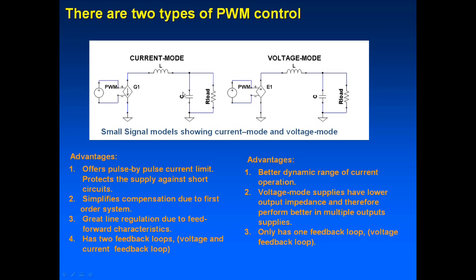That first-order behavior is a big advantage: you can compensate with a type 2 op-amp. With current mode you use a type 2 compensator; with voltage mode you use a type 3 compensator. Number three: current mode has great line regulation due to its feedback characteristics. Number four: current mode has two feedback loops — voltage feedback and current feedback.